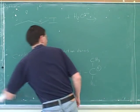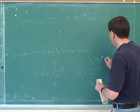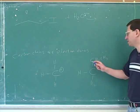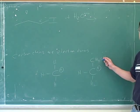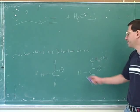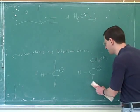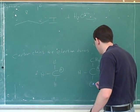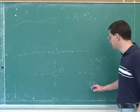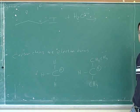It doesn't really matter how long the carbon chains are — there's no real difference between how long a chain is. The way to make the carbocation more stable is to replace hydrogens with carbon chains. If you put another carbon chain on, it doesn't matter how long it is, but adding another chain makes it even more stable than before.